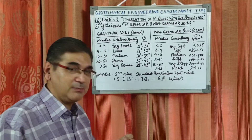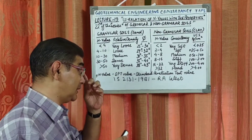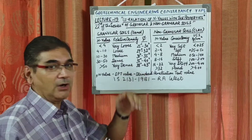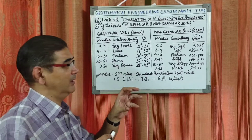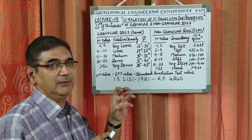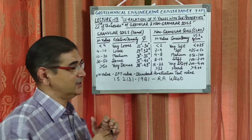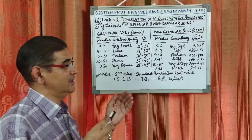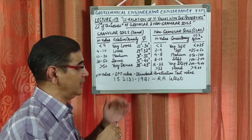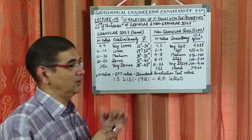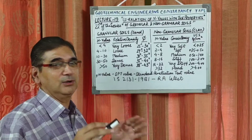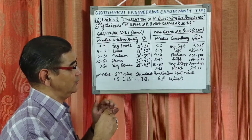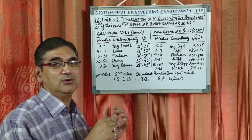The SPT test is conducted in the field where we drop a hammer (monkey) of weight 63.5 kg from a 75 cm drop vertically, either manually or by auto-tripped hammer. Three values are recorded: N1, N2, and N3. N1 is the seating value, and the actual Standard Penetration Test value N is the sum of N2 plus N3.